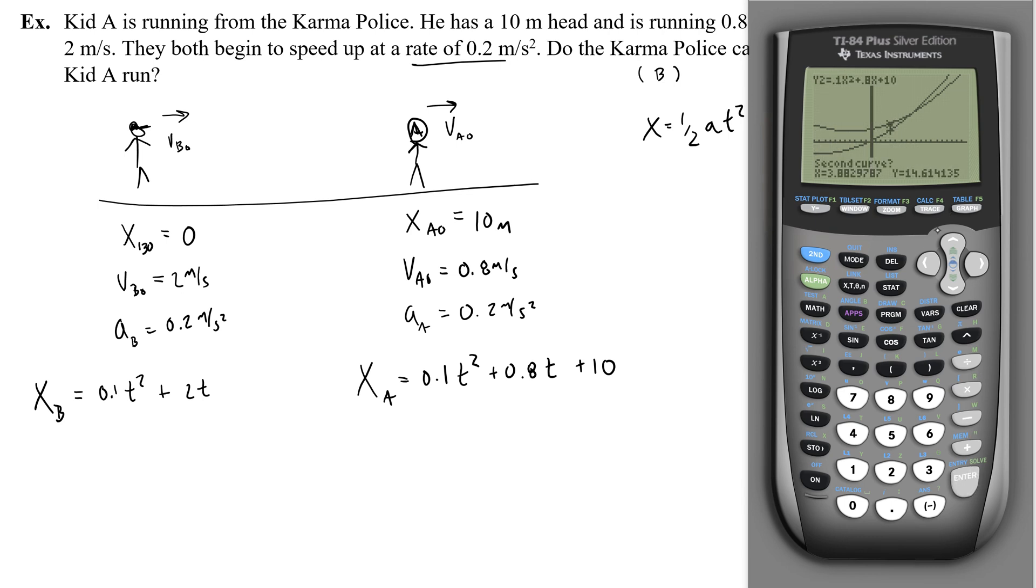So first curve to the left, second curve, go over to the right, guess. I'm just going to click enter because I don't care to guess. Okay, so at x equals 8.33, that's the time. They intersect at 23.611.